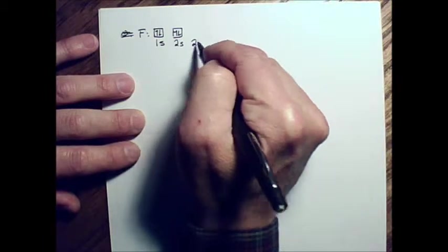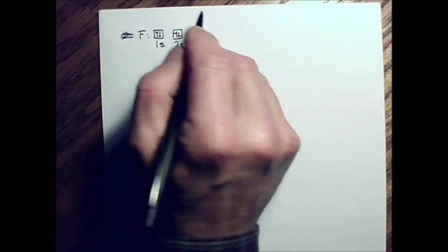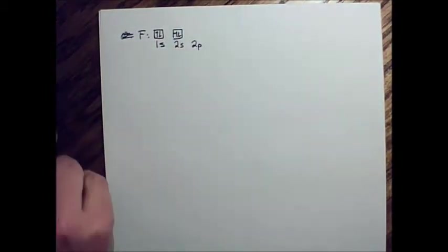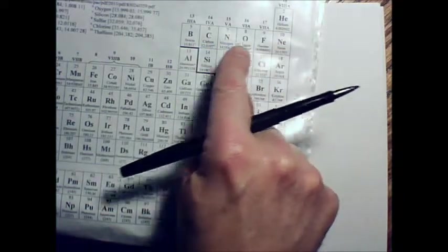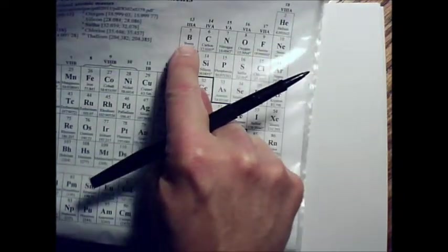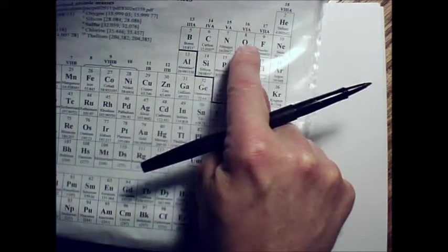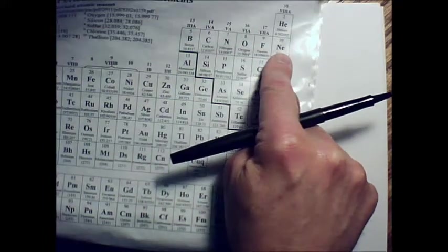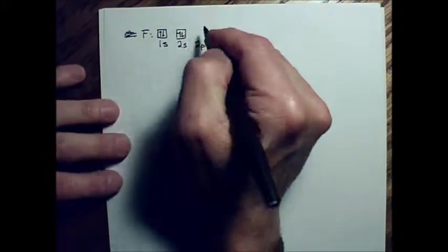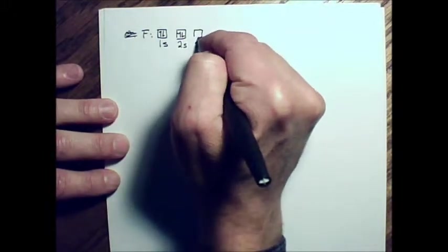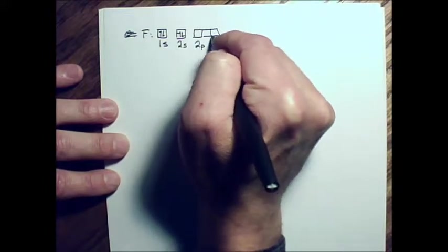And then we're in the 2p, so that section of the periodic table. There is no 1p. So this is the 2p section. And so over here in the 2p section, we need 1, 2, 3, 4, 5, 6. We need space for 6 electrons. And since an orbital can only have 2 electrons, that means we're going to need 3 orbitals, and that's represented by 3 boxes.